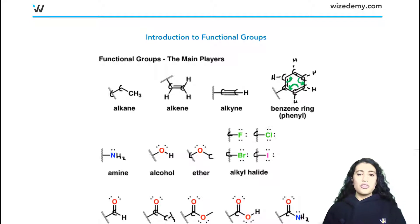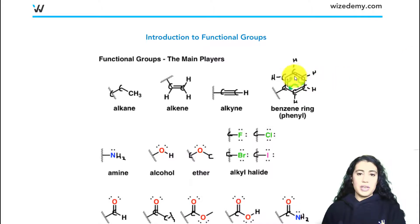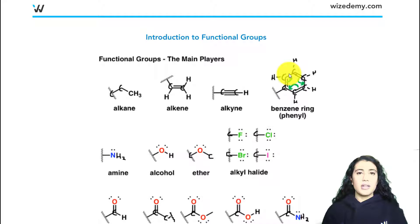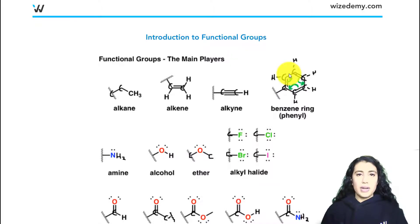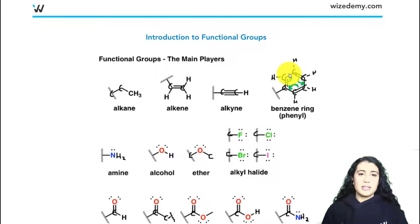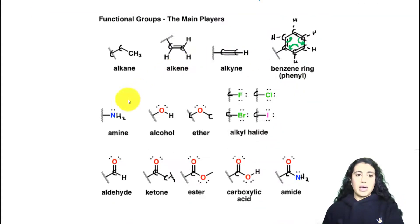So it's actually more like each of the carbon-carbon bonds are kind of halfway between a single and a double bond — that's a unique scenario. We'll learn more about naming and properties of the benzene ring because it is quite different. In the next row we see that we have an amine.